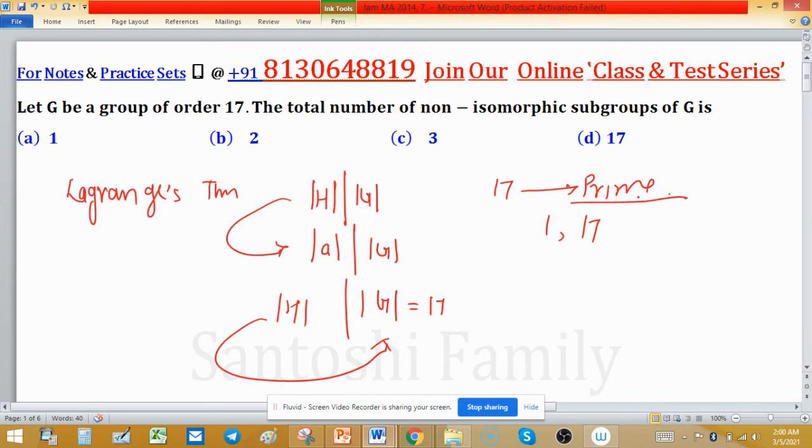So G has only two subgroups: the group itself, and the subgroup of order 1. This is nothing but the trivial subgroup with order 1, which is not equal to 17.